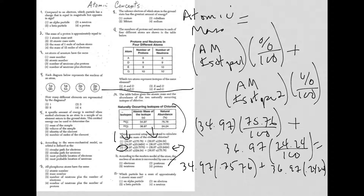Question 11: according to the modern model of the atom, the nucleus of an atom is surrounded by one or more — obviously, the answer here is electrons. Electrons are always on the outside of the nucleus. It's a fact you need to know.